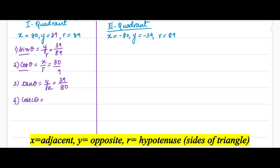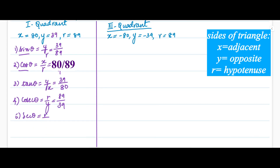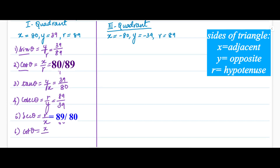Cosecant theta is r divided by y, the reciprocal of sine theta, giving 89/39. Secant theta is r divided by x, the reciprocal of cos theta, giving 89/80. Cotangent theta is x divided by y, the reciprocal of tan theta: x = 80, y = 39, giving cot theta = 80/39.